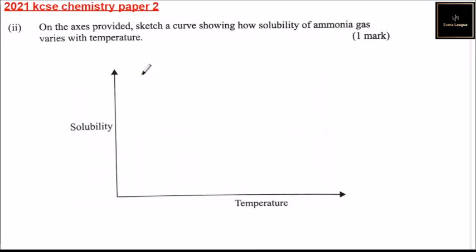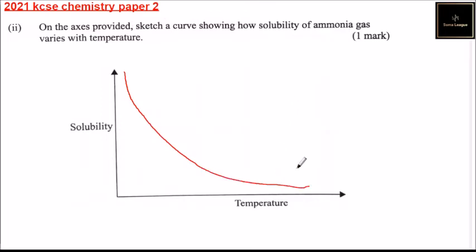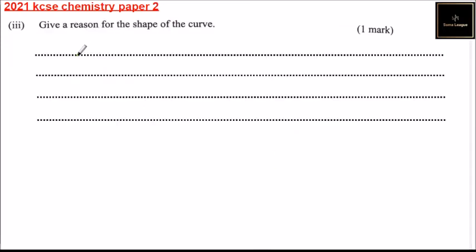Roman numeral two: on the axis provided, sketch a curve showing how the solubility of ammonia gas varies with temperature. The solubility of ammonia decreases as temperature rises. So the solubility is high when temperature is low, and decreases as temperature rises.